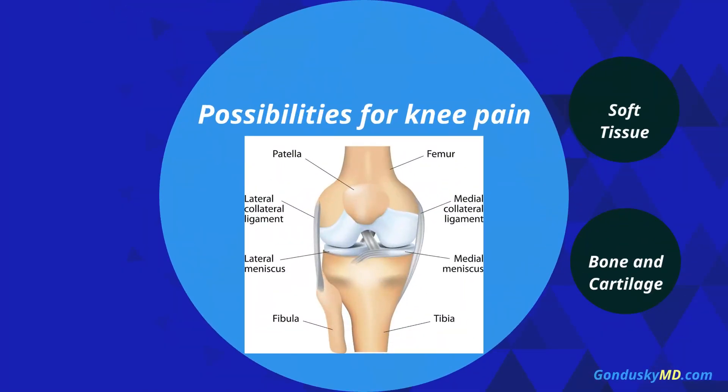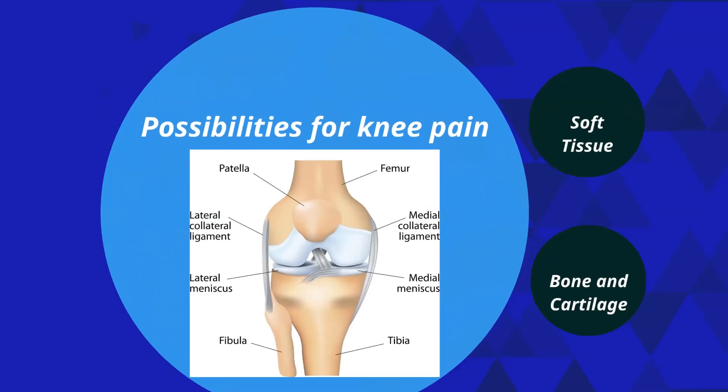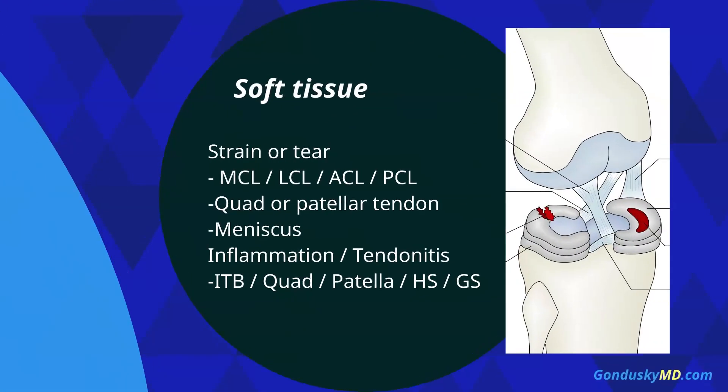Now let's talk about the possibilities for a knee joint — what's called a differential diagnosis. There are soft tissue problems and there are bony and cartilage problems. From a soft tissue standpoint, you can strain or tear ligaments in the knee: the medial collateral ligament, lateral collateral ligament, the ACL, and the PCL.